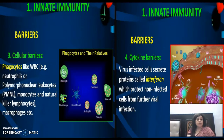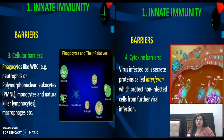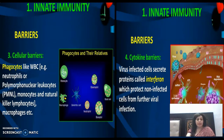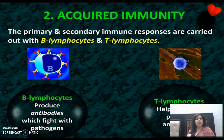Cellular barriers में phagocytes आते हैं जो antigens या microorganisms को eat up करते हैं। इनमें WBC, neutrophils, polymorphonuclear leukocytes, monocytes, natural killer lymphocytes, और tissues के अंदर macrophages शामिल हैं जो phagocytic action रखते हैं। Cytokine barriers में virus से already infected cells एक protein secrete करने लगती हैं जिसे interferon कहते हैं, जो further infection को रोकता है।